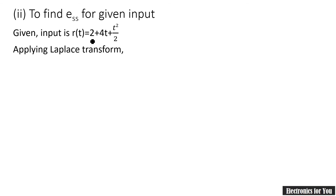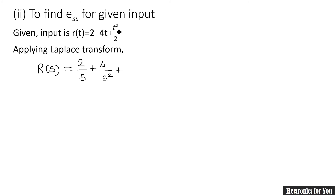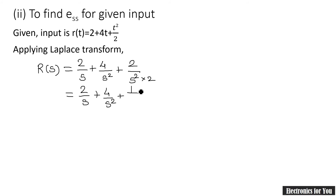The given input is r(t) equals 2 plus 4t plus t²/2. Applying the Laplace transform, R(s) equals 2/s plus 4/s² plus — for t², the Laplace is 2/s³, and since we divide by 2, the term becomes 1/s³. Therefore R(s) equals 2/s plus 4/s² plus 1/s³.